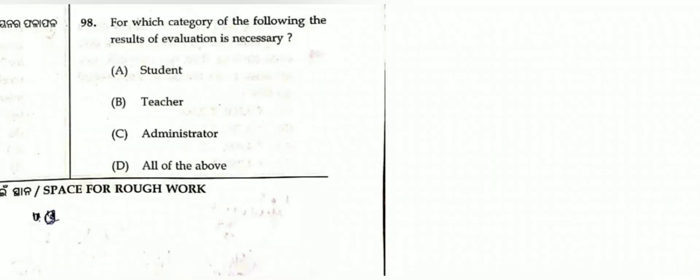Question number 98: For which category is the result of evaluation necessary? The options are student, teacher, administrator, or all of the above. Since evaluation results are needed for students, teachers, and administrators, all of the above is correct. Option D is correct.